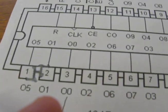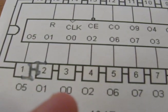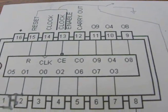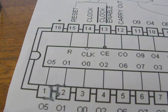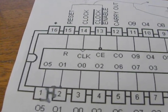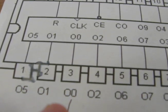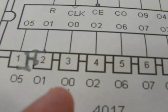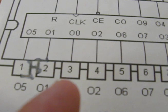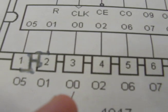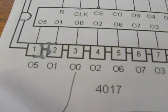In a bit more detail, I think what happens is after this 4017 runs through its full cycle, it counts to 10, and then output 0 goes high.